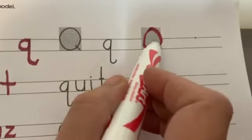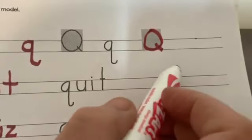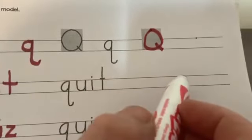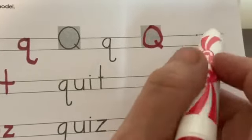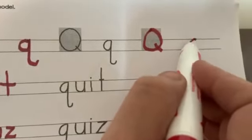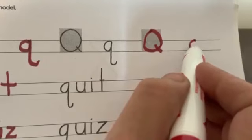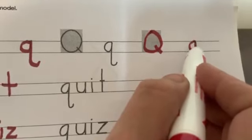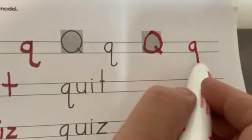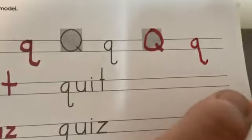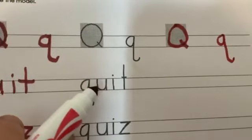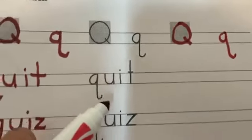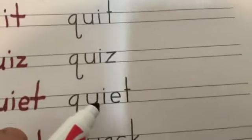Go back and put a little line in the corner. Capital Q. Lowercase Q: start off with a magic C, up like a helicopter, down, down, down, and U-turn. Good job! Let's work on our words. We have: quit, quiz, quiet, quack, and equal.